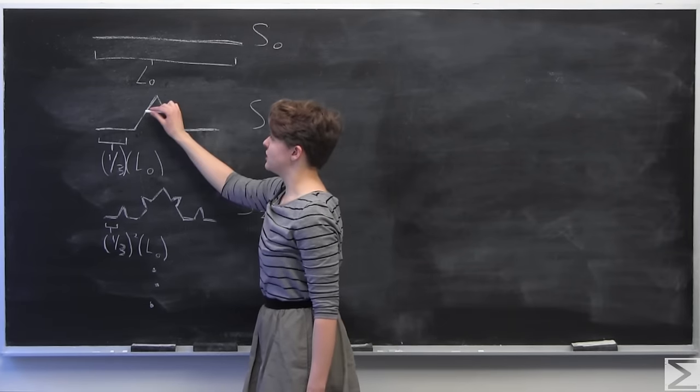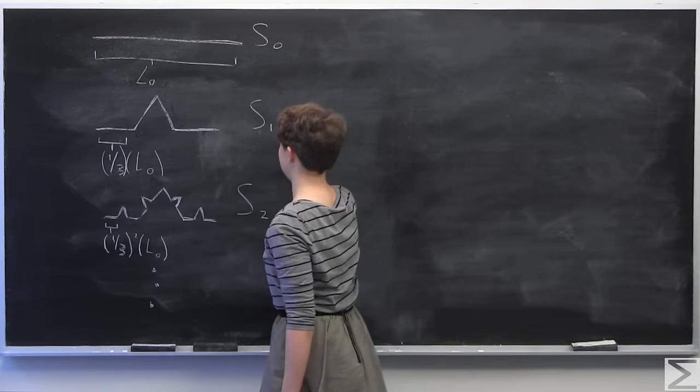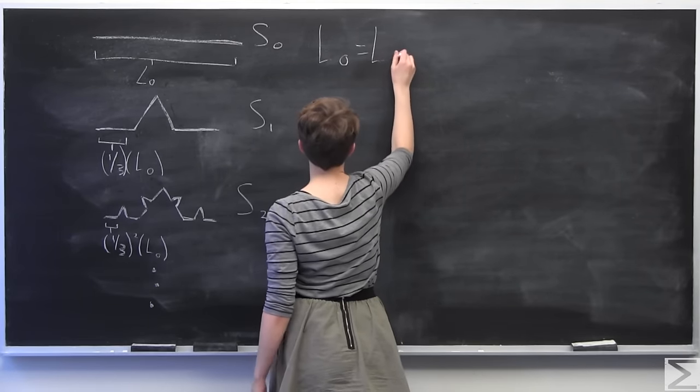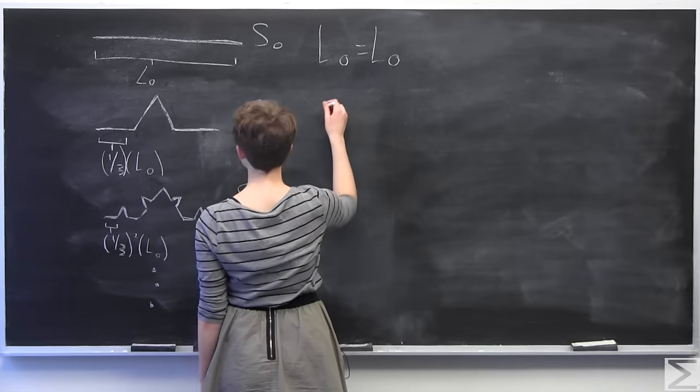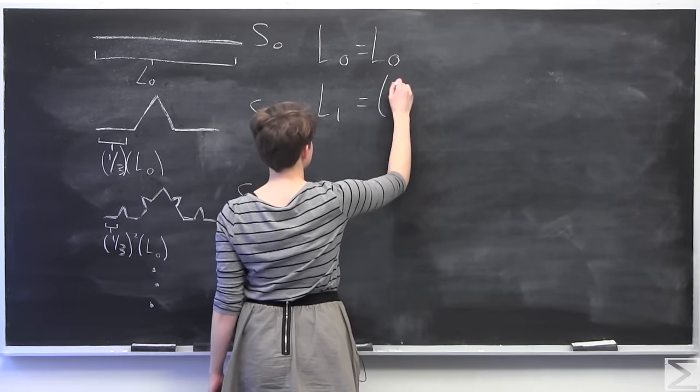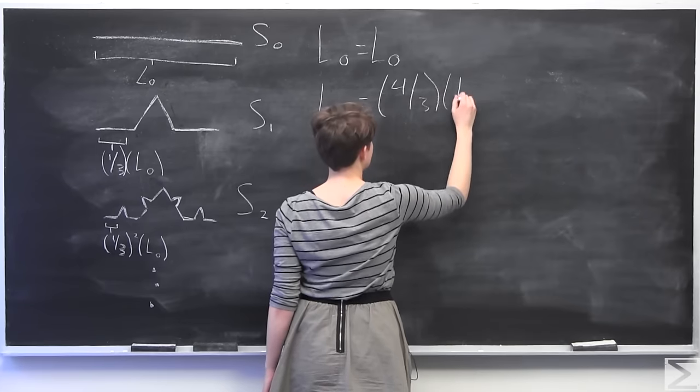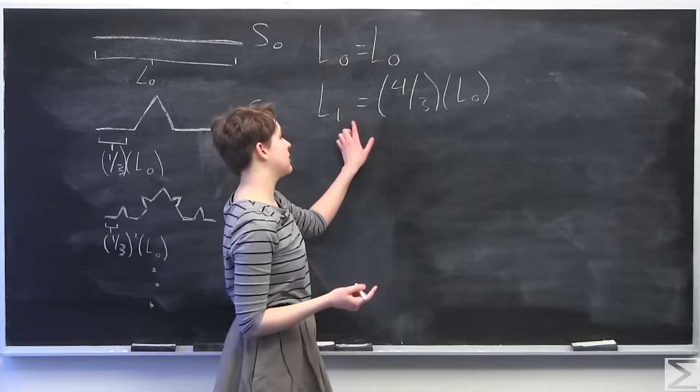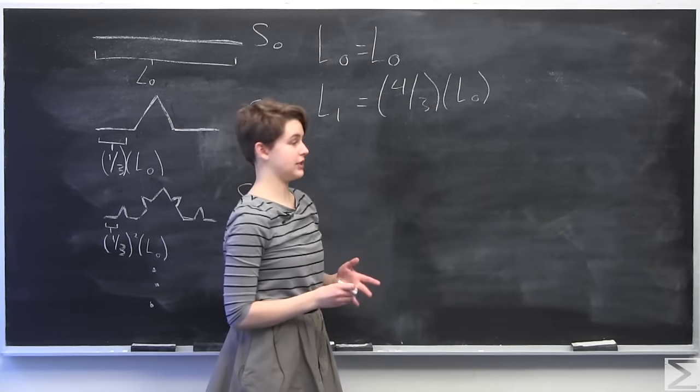We know that we have one third plus one third plus one third plus one third. So I'll write up here that L0 has length L0 and L1 has length, as we just determined, four thirds times L0. And I'm going to write all of these formulas in terms of L0, just for clarity.